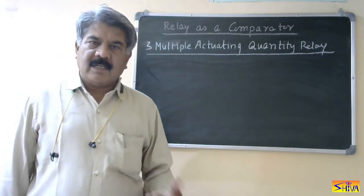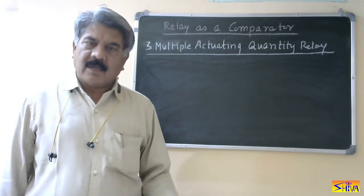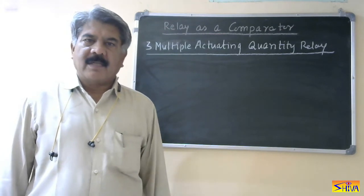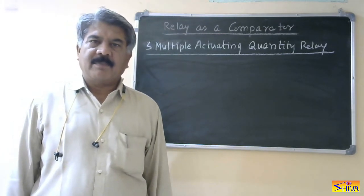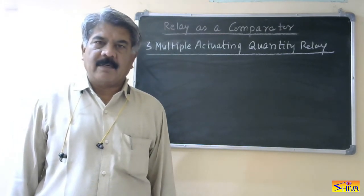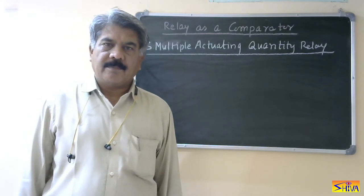So that is all about relay as a comparator — single actuating quantity, double actuating quantity, and multiple actuating quantity. The advantage of the multiple actuating quantity comparator is that non-conventional characteristics can be generated; the drawback is that it is costly. It also provides the directional feature and is reliable. Thank you.